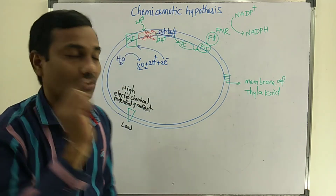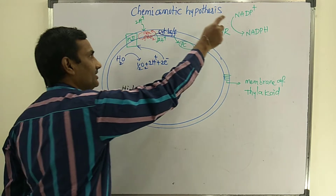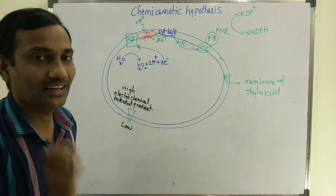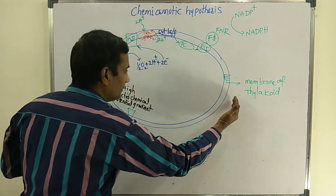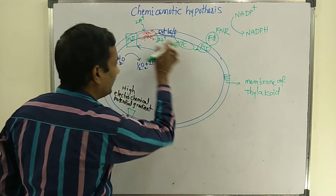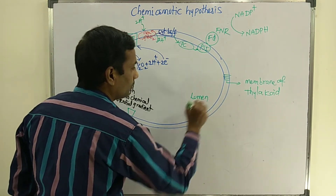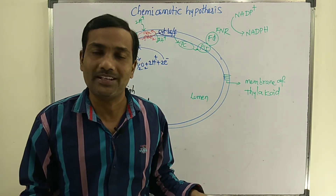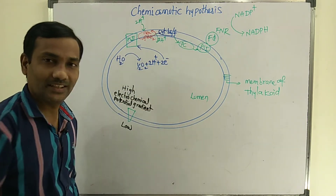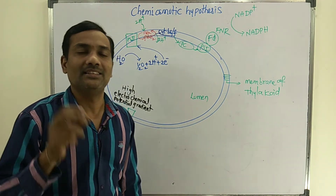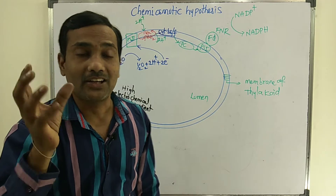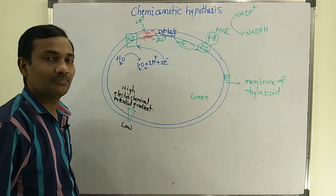Whatever electron exits from PS2 finally reaches NADP+. This is the total enlarged diagram of a single thylakoid. The space found inside the granum thylakoid is known as the lumen — that entire empty space inside the thylakoid. Two photosystems participate in the Z-scheme pathway, and non-cyclic photophosphorylation occurs in the membranes of the thylakoid, playing an important role in the accumulation of protons in the lumen.